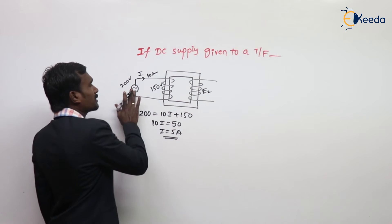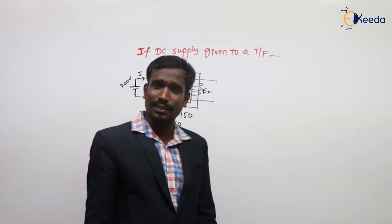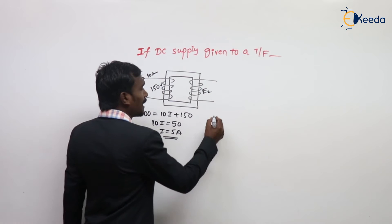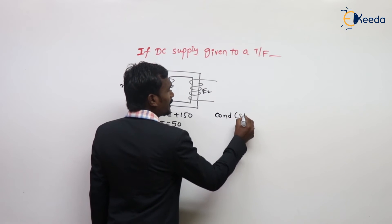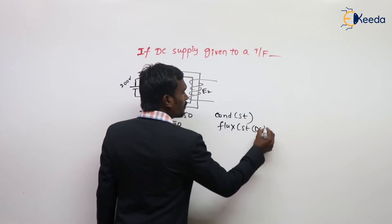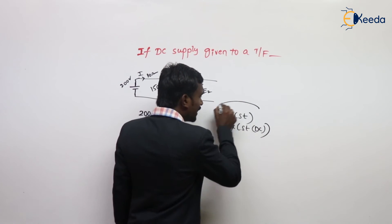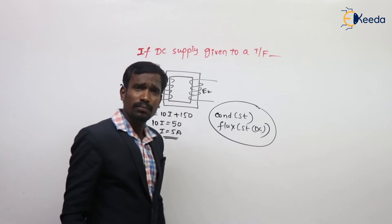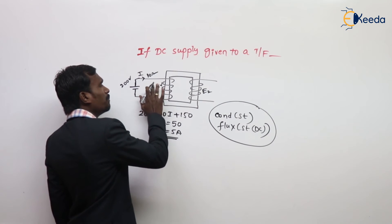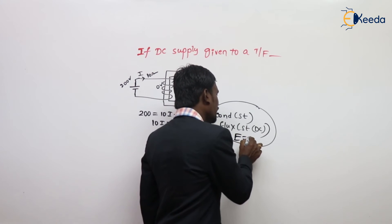Now I am giving the same 200 volts as DC supply to the transformer. When DC supply is given, the conductors are stationary and the magnetic flux is also stationary — it is constant DC, not AC. So is there any relative motion between them? There is no relative motion, and therefore there is no EMF induced.